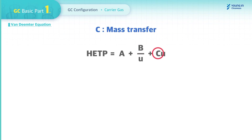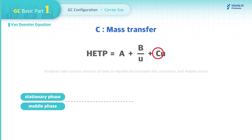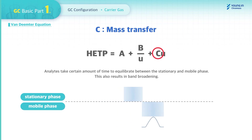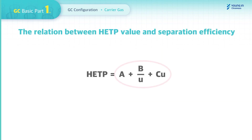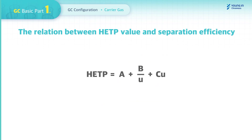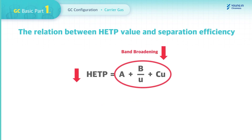Last, Term C — mass transfer. Analytes take a certain time to equilibrate between the stationary and mobile phases, which also results in band broadening. When the band is broadening, the plate height gets higher and separation efficiency decreases. In conclusion, the lower the HETP value, the greater the separation efficiency.